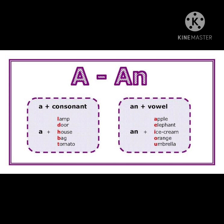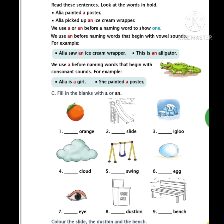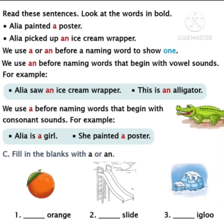Children, I think you understood when to use A and AN. Let's see our book. Open page number 55 in your SP book. I am reading the sentences on page number 55. Put your finger and listen carefully. Read these sentences and look at the words in bold. First sentence: Aaliyah painted a poster. We used A before poster because the word poster starts with P and P is a consonant. Now the next sentence: Aaliyah picked up an ice cream wrapper. We wrote AN before ice cream because the word ice cream starts with I, and I is a vowel. So we must write AN ice cream.